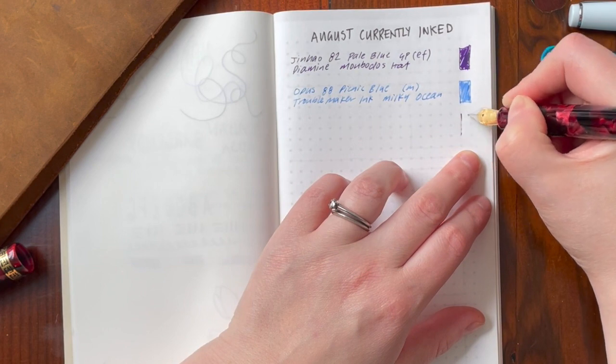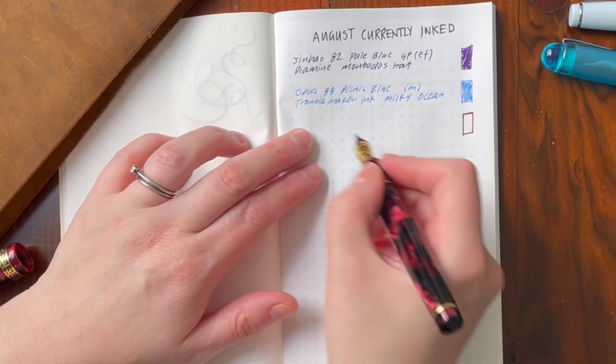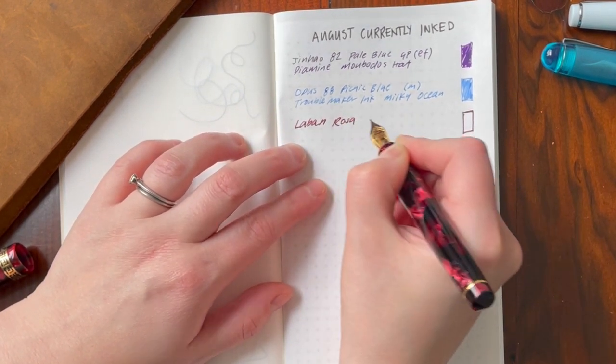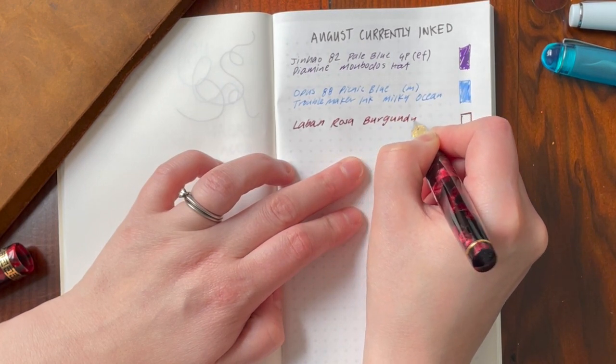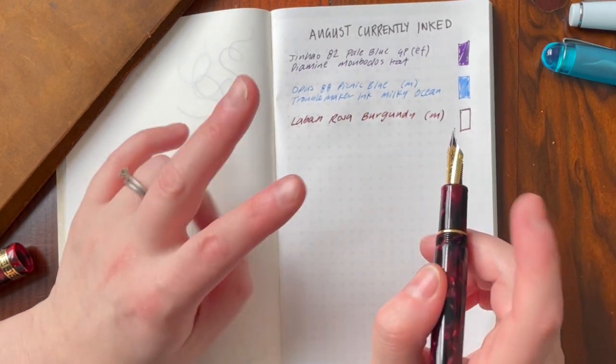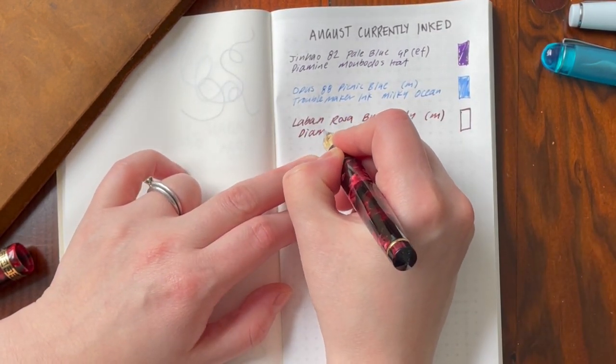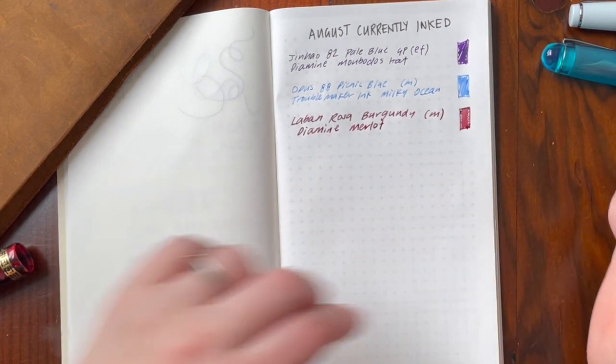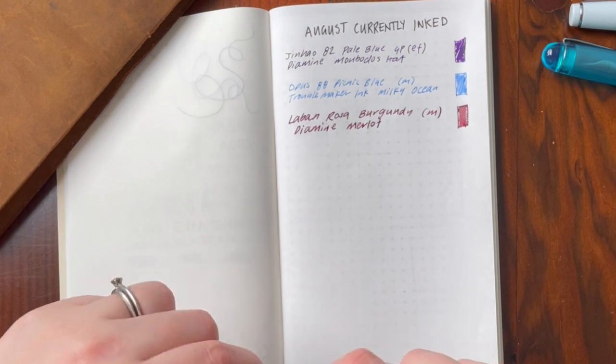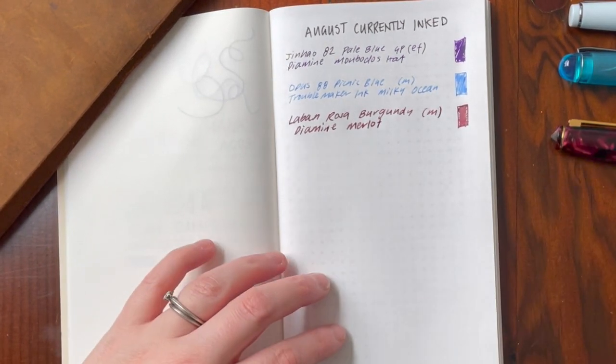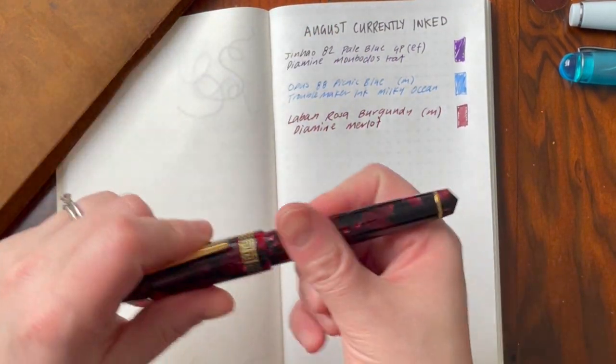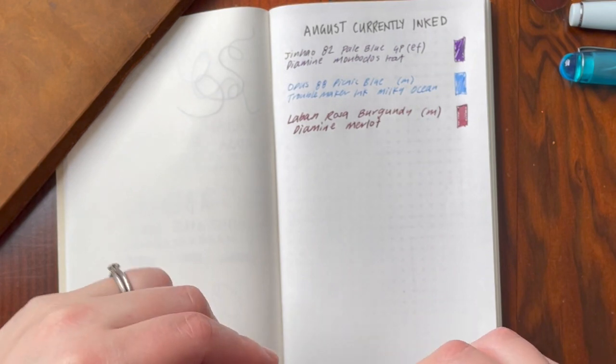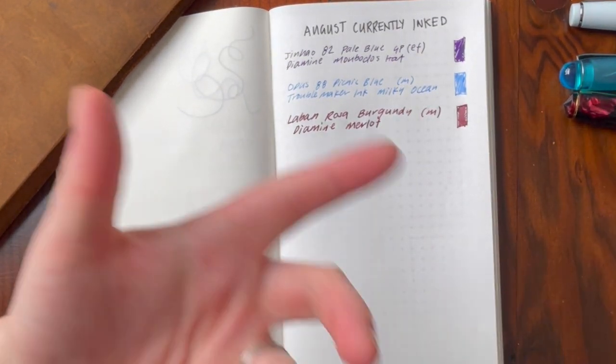I say that and then it hard starts. There we go. So there is still some finessing to be done. This is the Laban Rosa in Burgundy. Medium nib. I mean, look at the difference in medium nibs compared to those two. And this has Diamine Merlot in it, which I just think is such a beautiful ink. I'm so excited to be able to try this ink. This sample was given to me by Shauna from Serial Nana. You have to check out her videos. Her videos are my favorite at the moment. So just how beautiful is that pen as well? It feels so amazing in the hand. It's got such a nice weight to it. The nib is gorgeous. Just think there might be some old ink in there. I bought this pen secondhand.